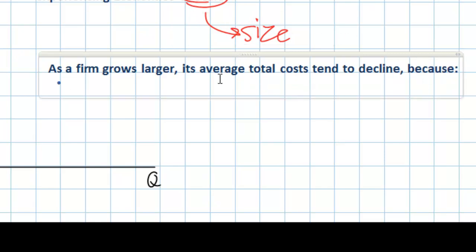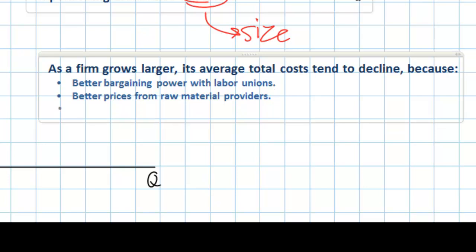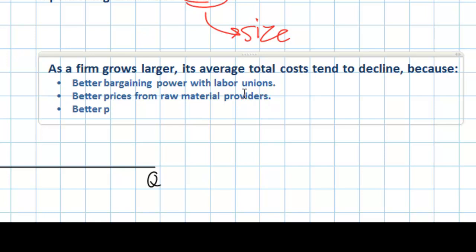Some of the reasons that average costs tend to fall include better bargaining power with labor unions — once a firm becomes large, it may be able to attract workers for lower wages. It might also get better prices from raw material providers. Our airplane factory, for example, could probably order aluminum and carbon fiber in bulk once it has opened its second factory. With only one airplane factory, the firm faces higher per-unit costs for raw materials. Once the firm acquires more capital and technology, it reduces production costs due to better productivity.